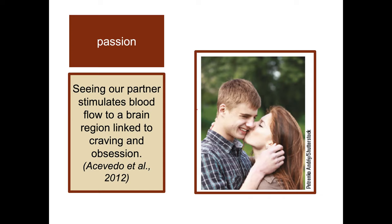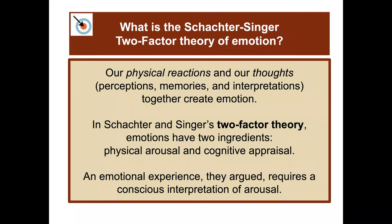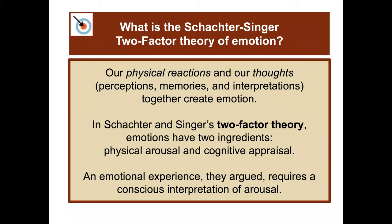What is the Schachter-Singer two-factor theory of emotion? It involves our physical reactions and our thoughts — perceptions, memories, and interpretations — which together create emotion. In this two-factor theory, emotions have two ingredients: physical arousal and cognitive appraisal. Schachter and Singer argued that an emotional experience requires a conscious interpretation of that arousal.